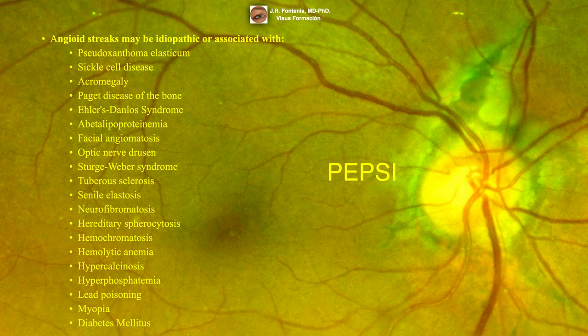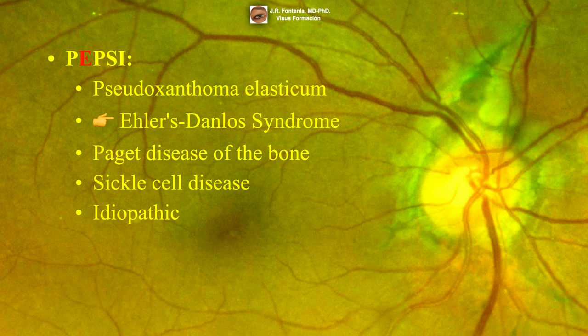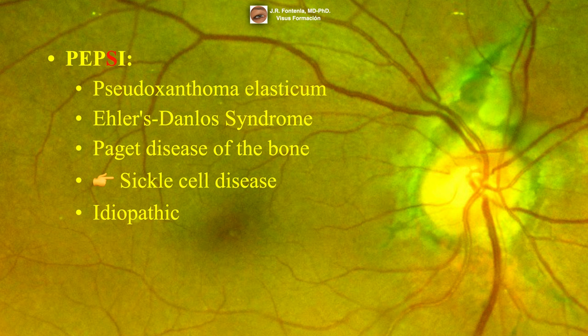Angioid streaks can be idiopathic or associated with numerous systemic diseases. A popular mnemonic used to remember the most common associations is PEPSI: Pseudoxanthoma elasticum, Ehlers-Danlos syndrome — though recent literature reveals this association is weak, occurring in less than 1% of patients — Paget disease of the bone, Sickle cell disease, and Idiopathic.